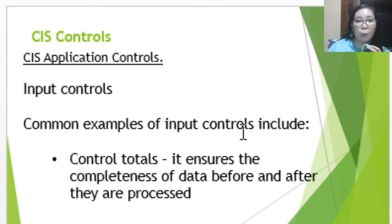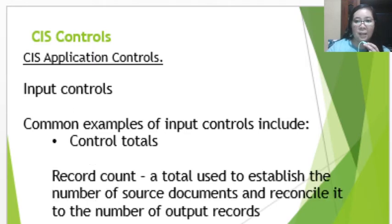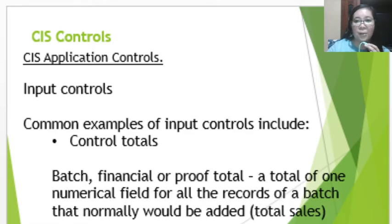Common examples of input controls include control totals. Control totals ensure the completeness of the data — that complete data are processed. Before data can be processed as input, the source document must be complete, and it should also be double-checked in the output. The first example is record count, which is a total used to establish the number of source documents and reconciling it to the number of output records recorded.